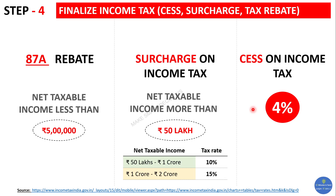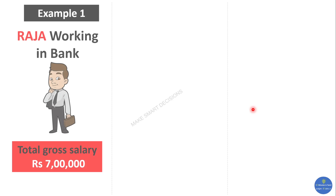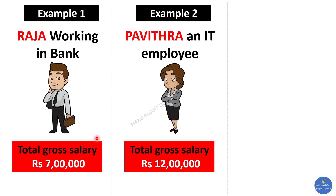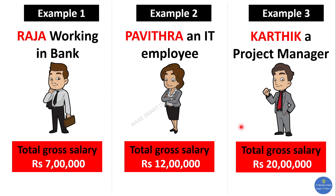To make things very clear, let's look at three examples. Number one: Mr. Raja, who works in a bank and earns an annual salary of seven lakhs. Number two: Pavitra, a software engineer earning twelve lakhs per annum. Number three: Karthik, a project manager earning twenty lakhs per annum.